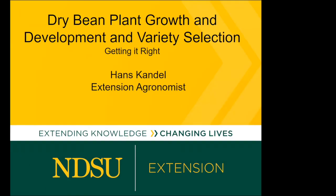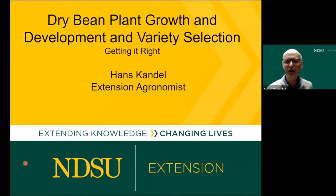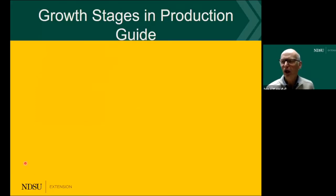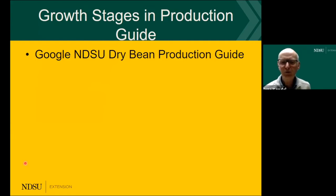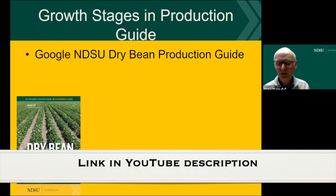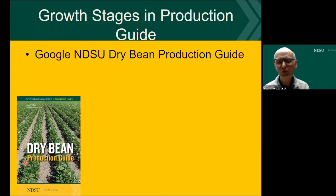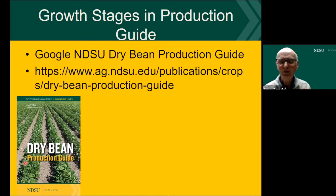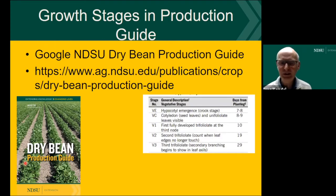I'm going to talk here a bit about plant growth first because I think that makes more sense than talking about the variety selection. We do have some resources available that are easy to find. It is our production guide — the easiest way is to Google the dry bean production guide. It is a booklet available in printed form at some extension centers and possibly also with the dry bean growers. Within the booklet, the web resources are exactly the same as in the booklet.